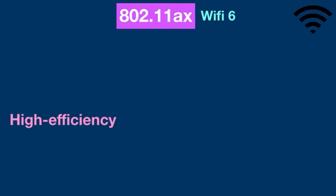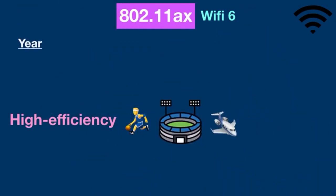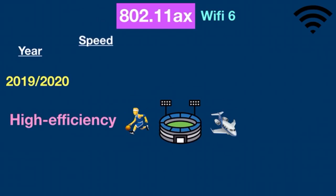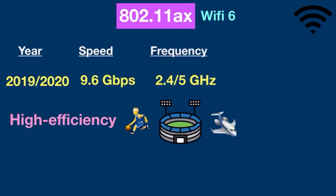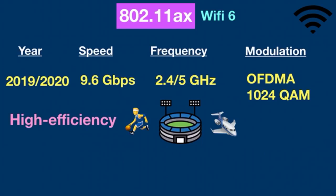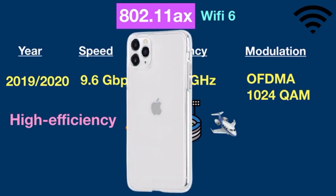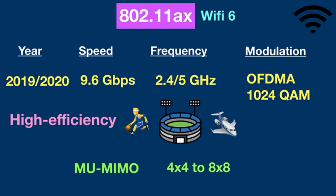802.11ax, also known as Wi-Fi 6 or high-efficiency wireless LAN, improved the performance of wireless LAN in dense scenarios such as sports stadiums and airports. It was released in late 2019 and throughout 2020. It provided speeds up to 9.6 Gbps in both 2.4 and 5 GHz bands. It was based on OFDMA — Orthogonal Frequency Division Multiple Access — and 1024 Quadrature Amplitude Modulation, which increased overall throughput and bandwidth. It's been used in the iPhone 12. It offered an increase in multi-user MIMO from 4x4 to 8x8, allowing even more devices to connect. Overall, it provided better and faster performance.